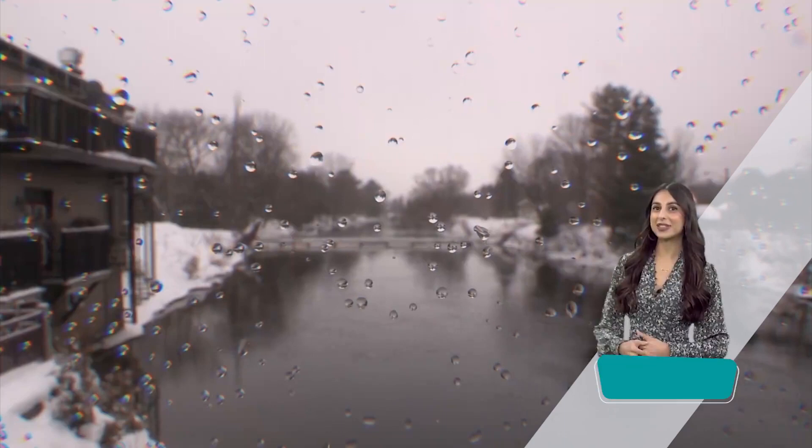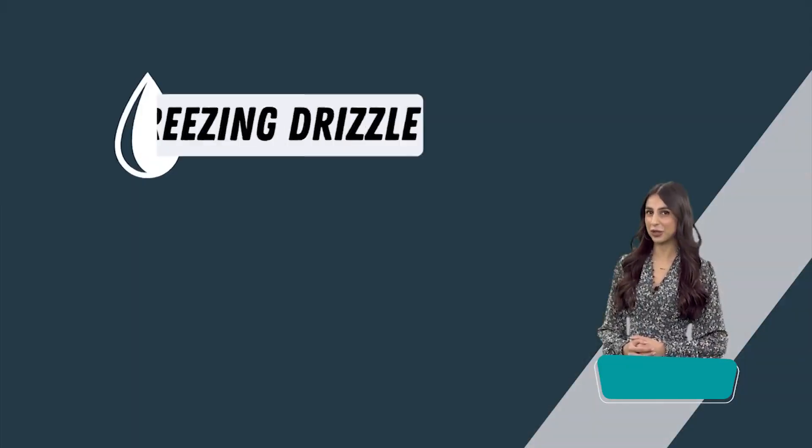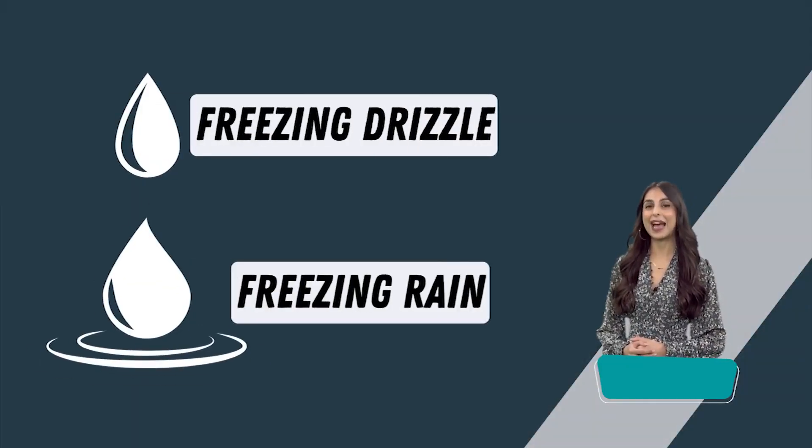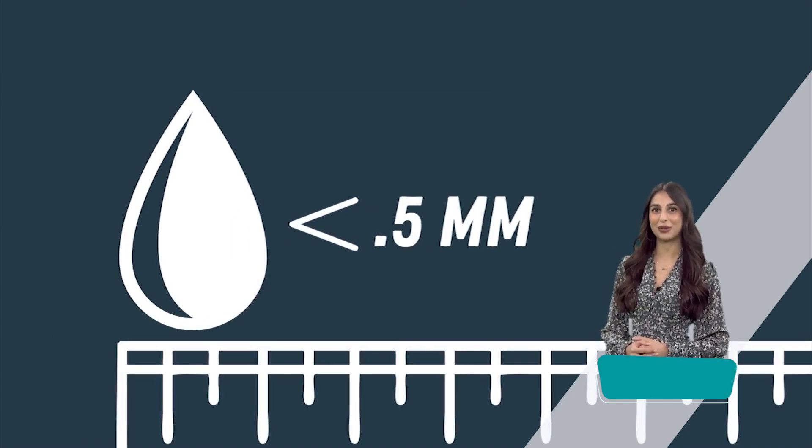Drizzle falls as smaller droplets than freezing rain does, measuring less than half a millimeter in diameter when hitting the ground.